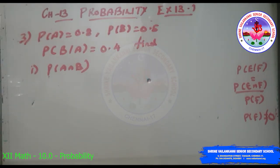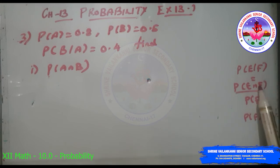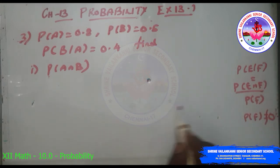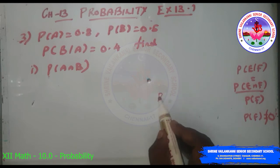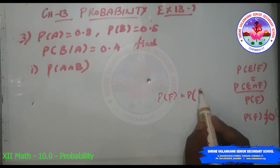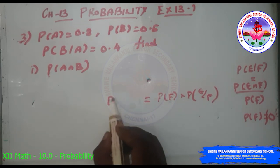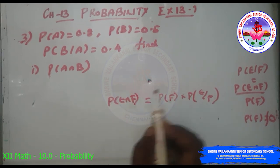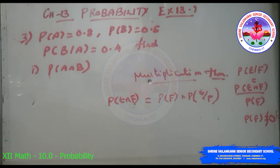Question 3: If P(A) = 0.8, P(B) = 0.5, and P(B|A) = 0.4, find P(A∩B). Using the multiplication theorem on probability: P(E|F) = P(E∩F)/P(F), so P(F) × P(E|F) = P(E∩F). Therefore P(A∩B) = P(A) × P(B|A), provided P(E) ≠ 0 and P(F) ≠ 0.